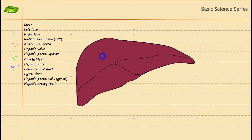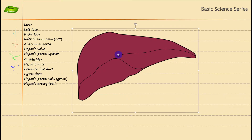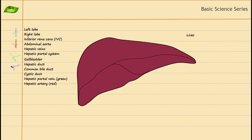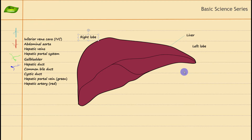Now let's design the blood vessels. First, let me label this main portion as the liver. The liver includes all the different parts I'm going to add, including the blood vessels. The liver has a left lobe and a right lobe, which are formed when a ligament — the falciform ligament — divides the liver into two lobes. So this is your left lobe and this one is your right lobe.